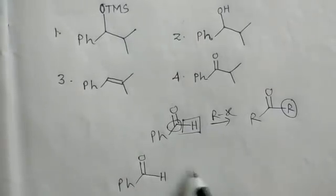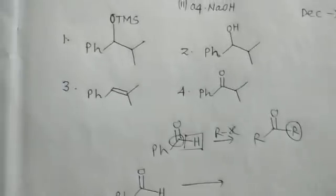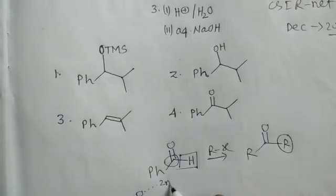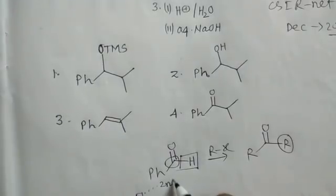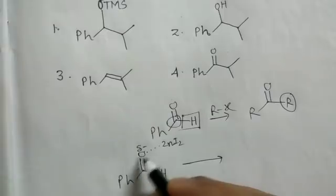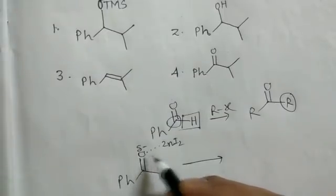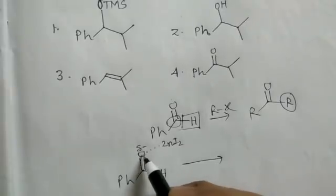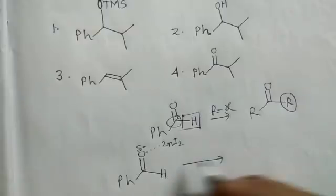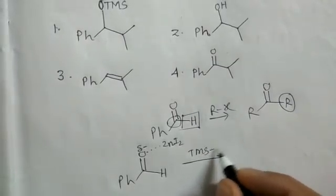Starting with the benzaldehyde molecule: zinc iodide acts as a Lewis acid and coordinates with the carbonyl oxygen. This withdraws electrons from the pi bond, weakening it and making the oxygen atom electron-rich and nucleophilic.